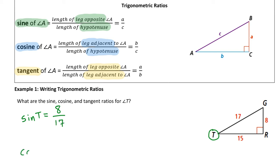For cosine of T, that's the length of the adjacent leg, 15, over the hypotenuse, which is still 17. The tangent of T is the opposite leg, which is 8, over the adjacent leg, which is 15.